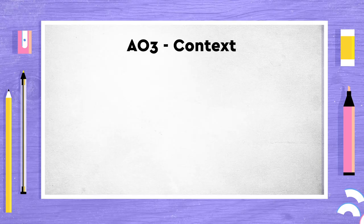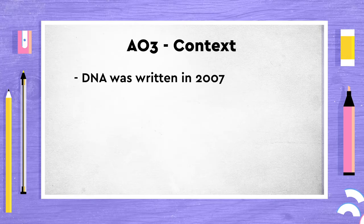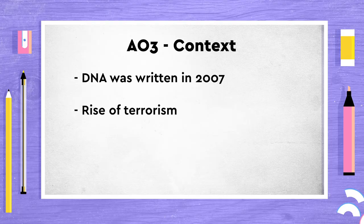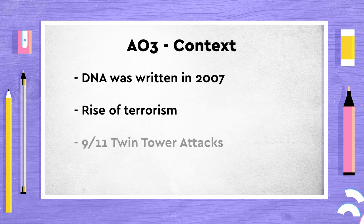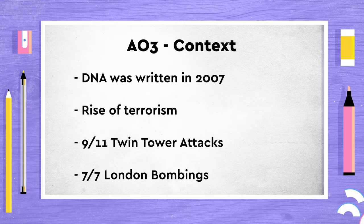This links to the time period the text was written in — 2007, the early 21st century. Many people were anxious about the threat of terrorism due to recent events: the Twin Tower attacks on September 11th, 2001, and the London bombings on the 7th of July, 2005. Equally, this is a time of increasingly widespread use of technology amongst young people via the internet, video gaming, the use of mobile phones and social media, which often led to a sense of isolation.